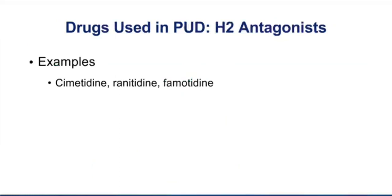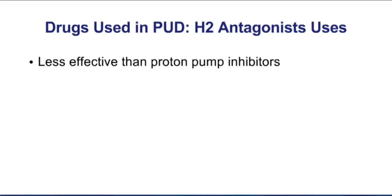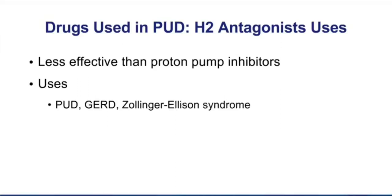Let's start by discussing the histamine H2 antagonists. The prototype of this group is the drug cimetidine, but there are other important members — ranitidine and famotidine. These drugs are going to be competitive inhibitors of the action of histamine on H2 receptors, and they're going to decrease the action of the proton pump. We can use histamine H2 blockers in peptic ulcer disease, in gastroesophageal reflux disease, and we can also consider them in Zollinger-Ellison.